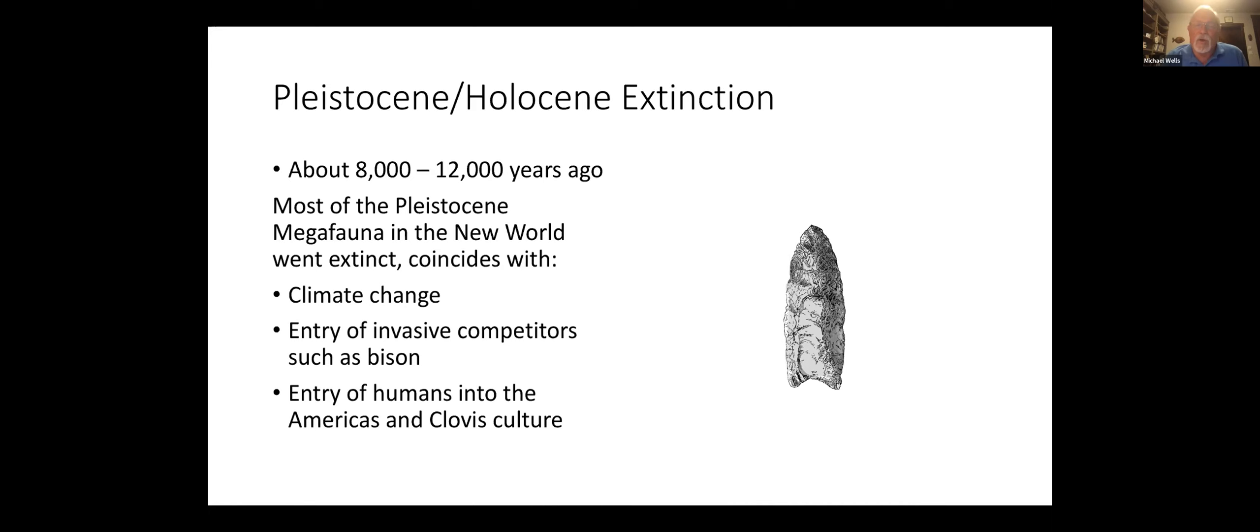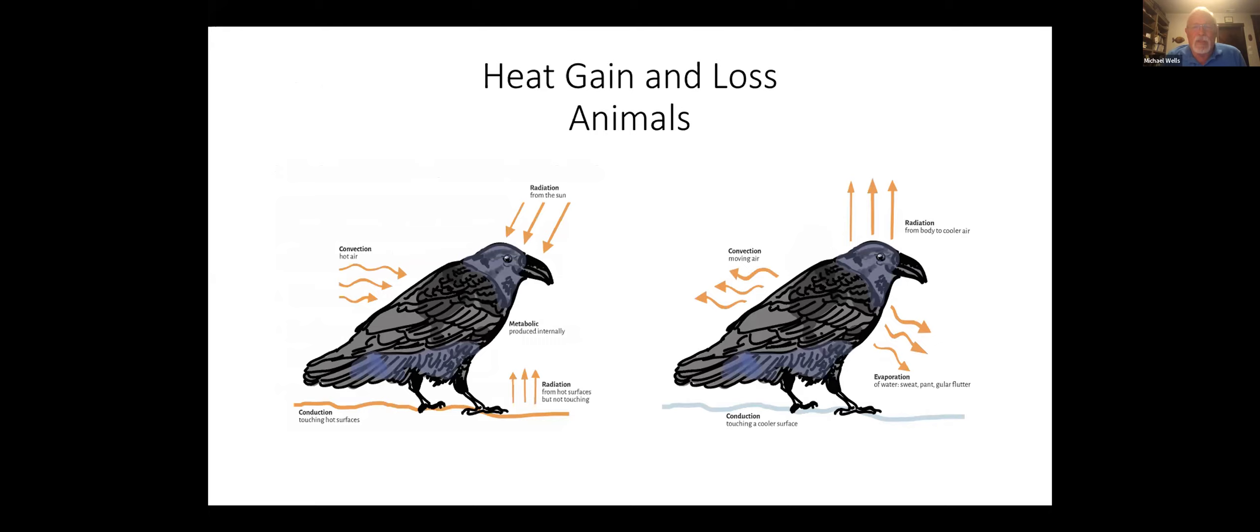About 8,000 to 12,000 years ago, a lot of those large animals, the large mammals, went extinct. That coincides with several different things. One was, of course, there was climate change going on, the Pleistocene, the ice ages were ending. Also, there was the entry of invasive competitors, and especially such as bison, that came into North America about that time. They were very effective grazers and out-competed a lot of the animals that at that time were Native North American grazers. Then also, the entry of humans into the Americas and the development of Clovis culture. Clovis culture is typified by the use of very large projectile points. It's assumed that some of these were probably used on very large animals. In fact, they have been found in association with the fossils of animals that apparently were killed.